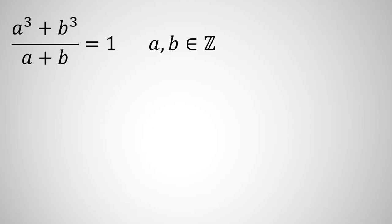In the first step, you should know the famous identity that A cubed plus B cubed equals A plus B times A squared minus AB plus B squared.